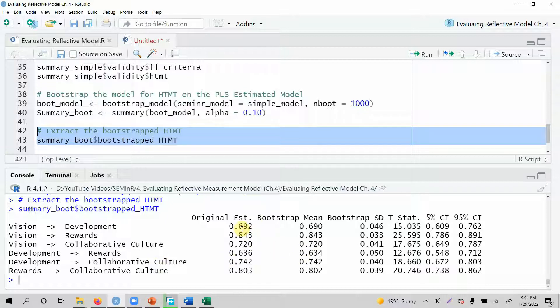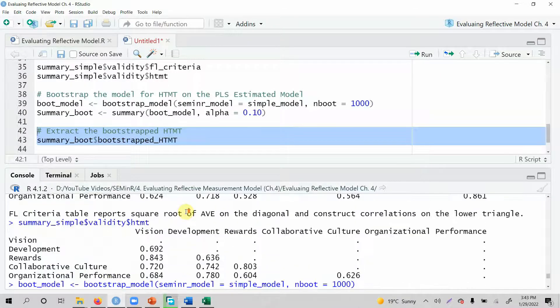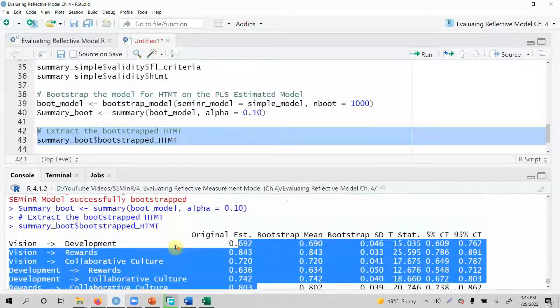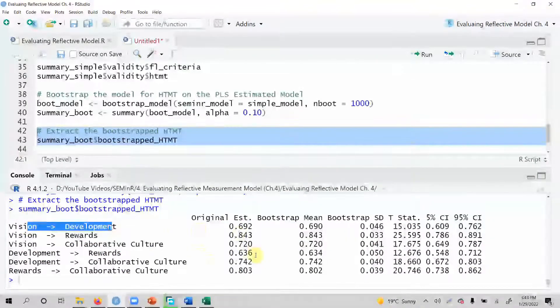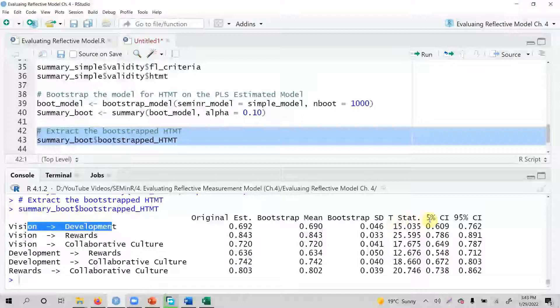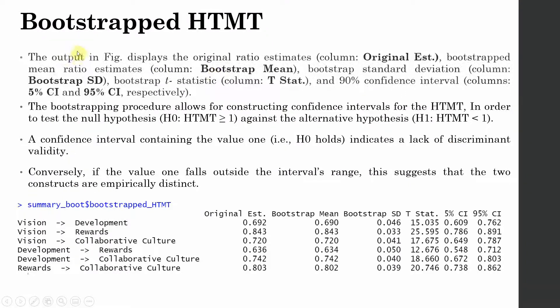So this is your bootstrapped HTMT. How do you interpret this? Look at this. This is the same as we had in earlier output. Look at this. The HTMT output 0.692 between vision and development. 0.692 between vision and development. So it's the same thing. But what we are interested in is this here, these values here. How do you interpret these values?